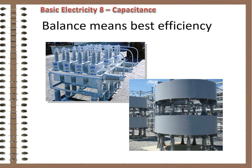Equal amounts of inductance and capacitance cancel each other out. Equipment — capacitor banks and reactor banks — are placed in the system to help with the balance. When inductance and capacitance are equal, or nearly so, most of the line capacity can go to transmitting watts, the real power that does work in the system.